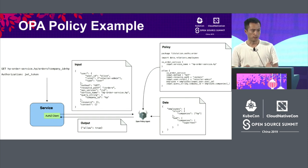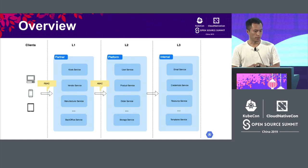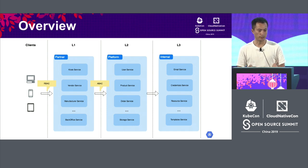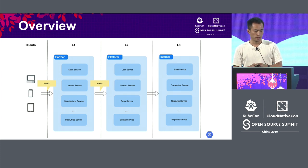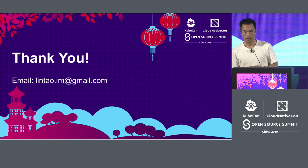That's basically how we enforce fine-grained access control in our L2 services. Here's the overview: in L1, we enforce role-based access control with Istio Mixer; in L2, ABAC using Open Policy Agent; and in L3, our internal services — we apply some network policies to limit access to the L2 services. Thank you. Because time is limited I can't dive into details, but if you are interested, please feel free to reach out to me. I'll be happy to answer.